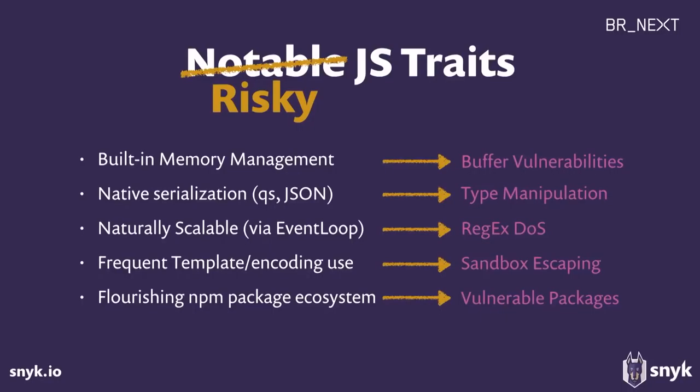Those are amazing capabilities, and they are indeed parts of the reason that JavaScript is so successful. But sometimes the same capabilities that are unique and make it awesome also make it vulnerable. You look at built-in memory management and I see a buffer object leaking memory from server-side. If you talk about native serialization, attackers can do type manipulation because types are decided at runtime. So a lot of this talk is about understanding how these capabilities can be abused and how attackers use them to find weaknesses.